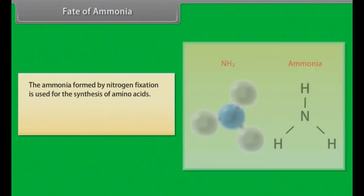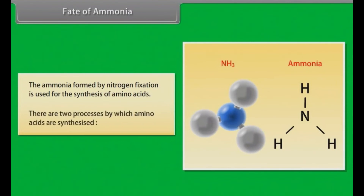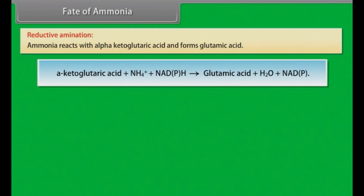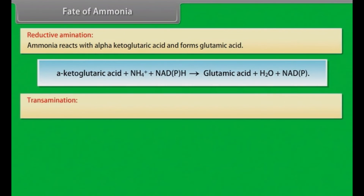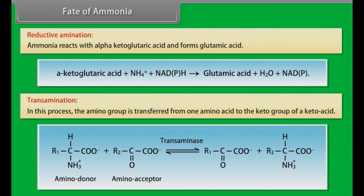Fate of ammonia: ammonia formed by nitrogen fixation is used for synthesis of amino acids through two processes. Reductive amination: ammonia reacts with alpha-ketoglutaric acid to form glutamic acid. Transamination: the amino group is transferred from one amino acid to the keto group of a keto acid.